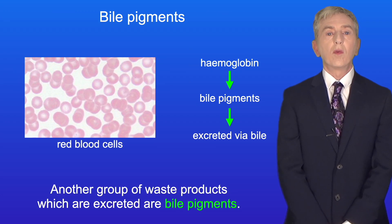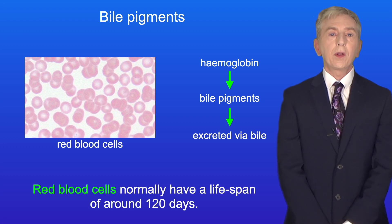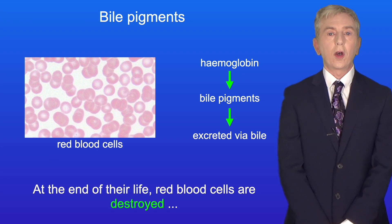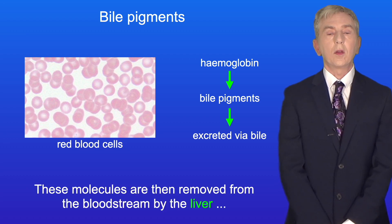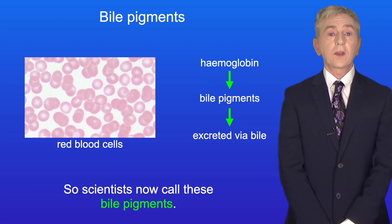Another group of waste products which are excreted are bile pigments. Bile pigments are formed from haemoglobin. Red blood cells normally have a lifespan of around 120 days. At the end of their life, red blood cells are destroyed and the haemoglobin is converted to other molecules. These molecules are then removed from the bloodstream by the liver and excreted into bile, and scientists call these bile pigments.